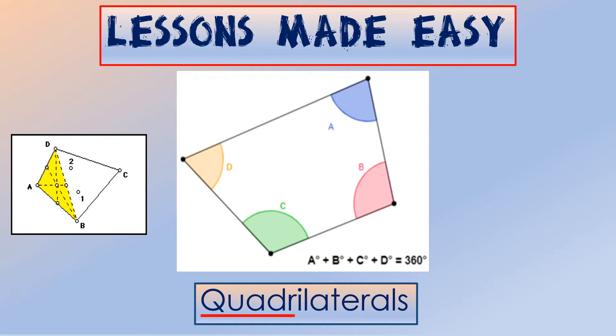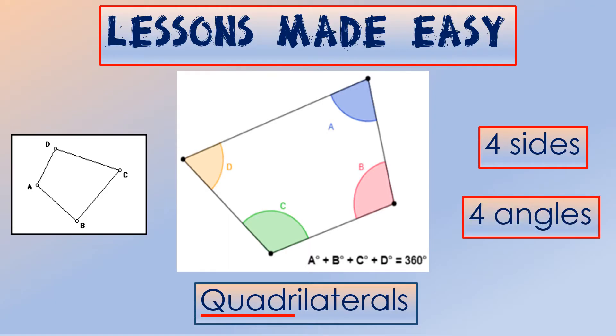The term quadri means four. This refers to the figures with four sides and four angles, or what we call quadrilaterals. Let's take a closer look at this given example. This figure has four sides and four angles. Therefore, we call this a quadrilateral.